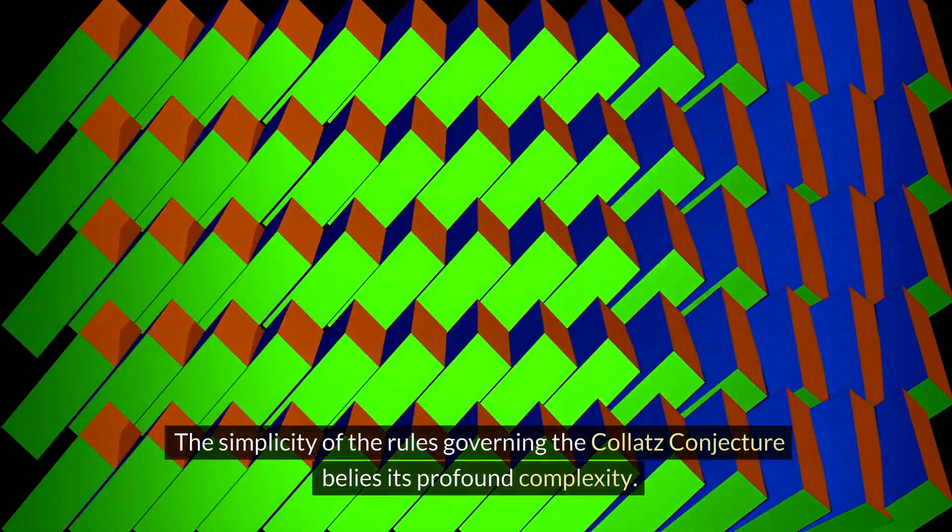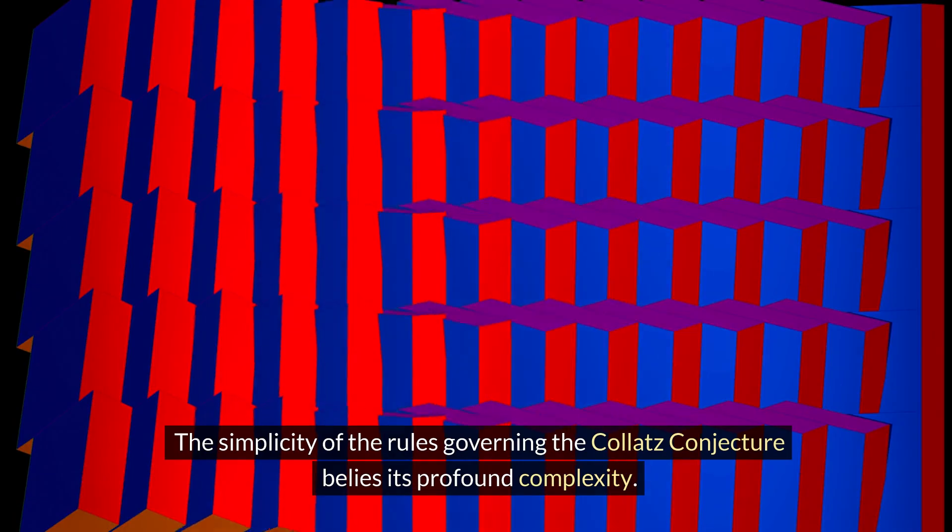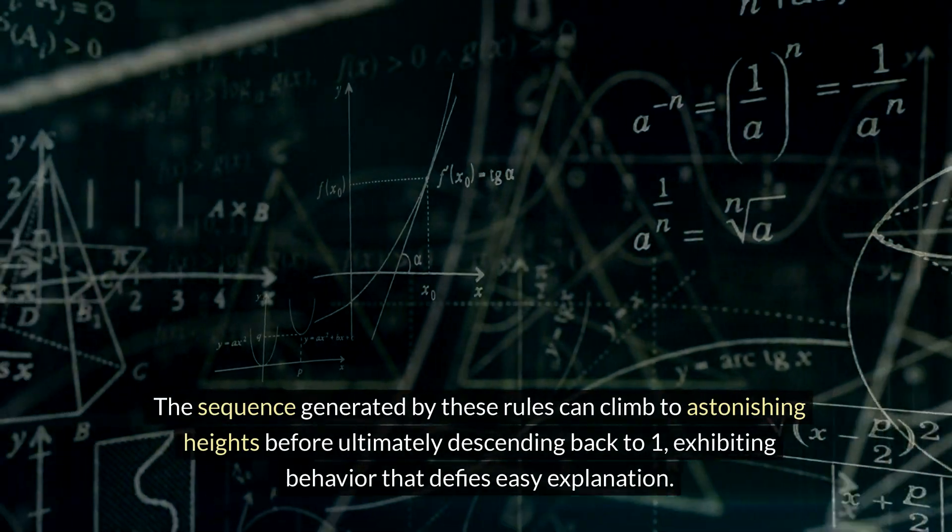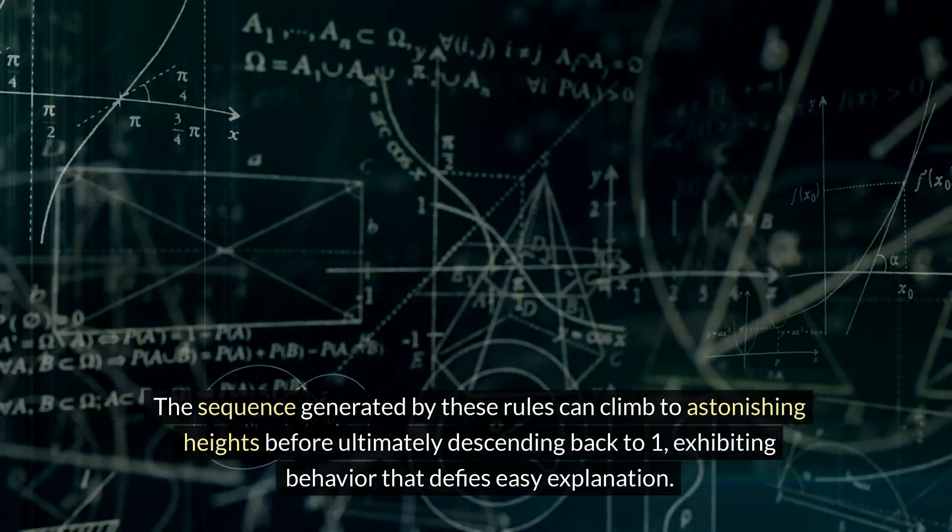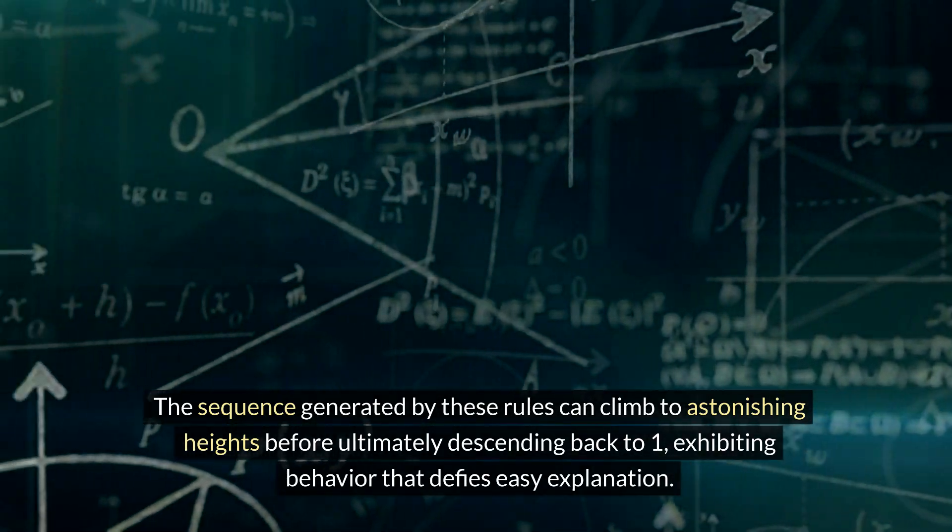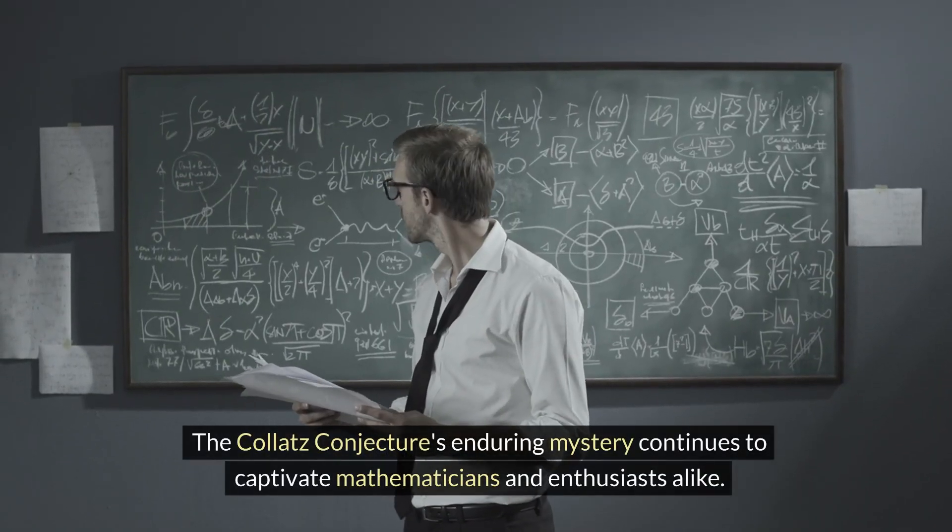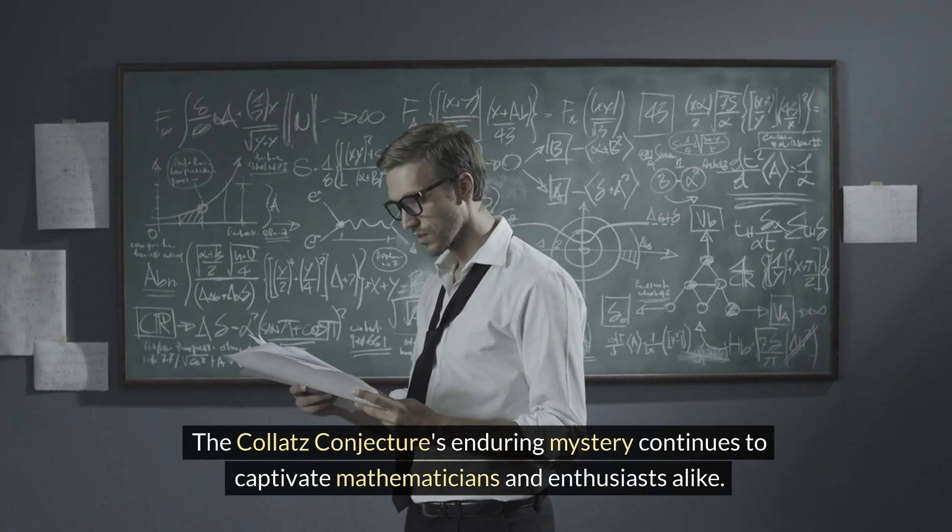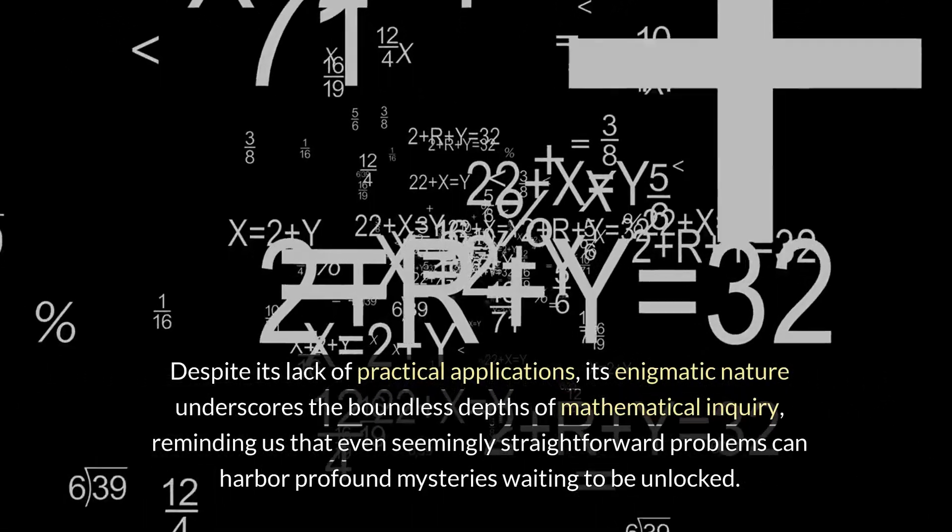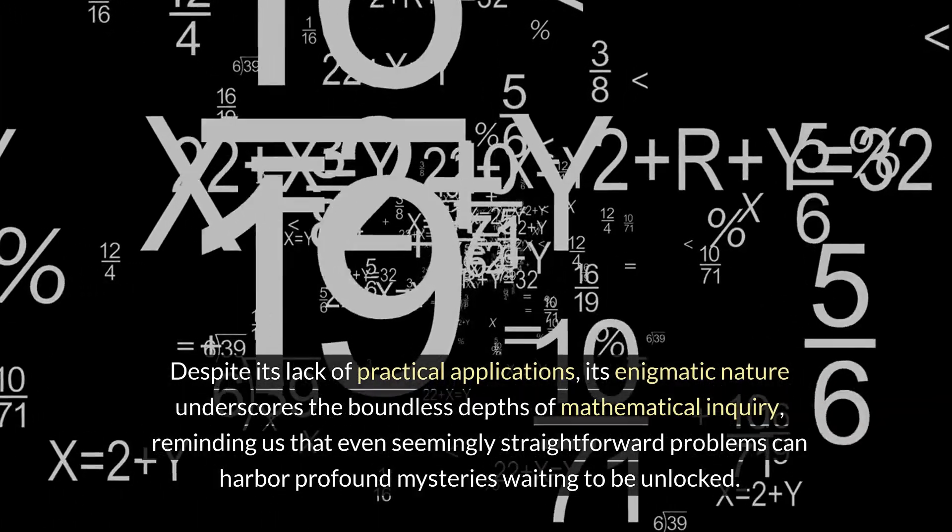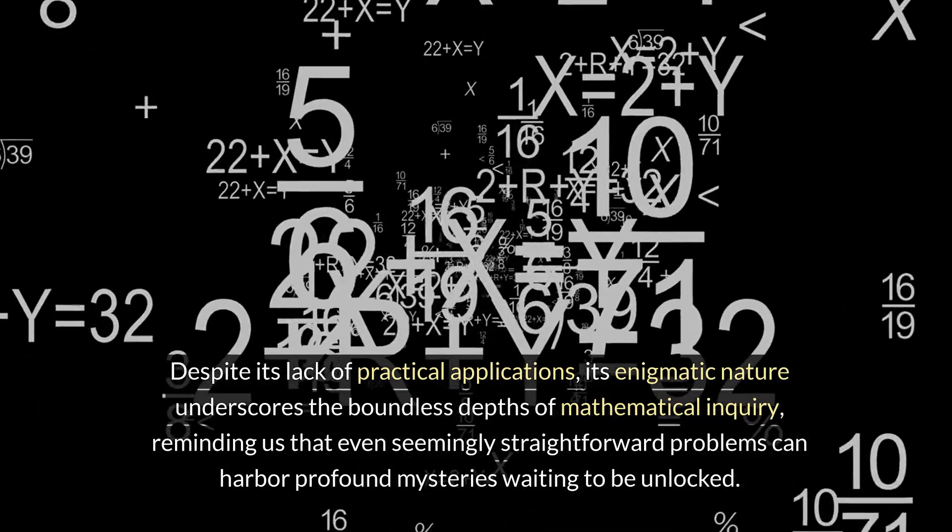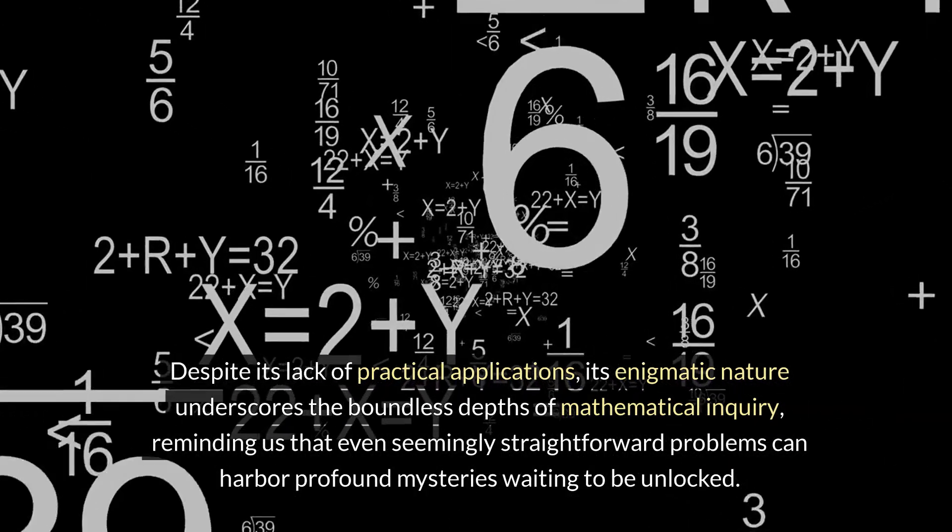The simplicity of the rules governing the Collatz conjecture belies its profound complexity. The sequence generated by these rules can climb to astonishing heights before ultimately descending back to 1, exhibiting behavior that defies easy explanation. The Collatz conjecture's enduring mystery continues to captivate mathematicians and enthusiasts alike. Despite its lack of practical applications, its enigmatic nature underscores the boundless depths of mathematical inquiry, reminding us that even seemingly straightforward problems can harbor profound mysteries waiting to be unlocked.